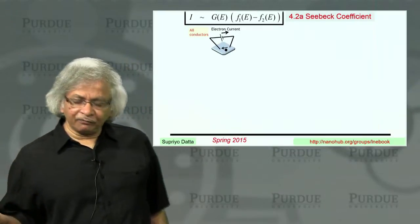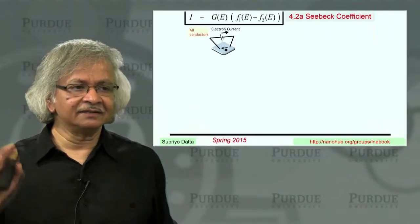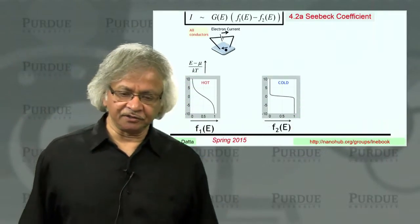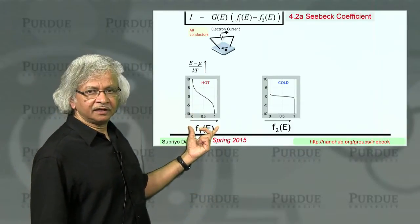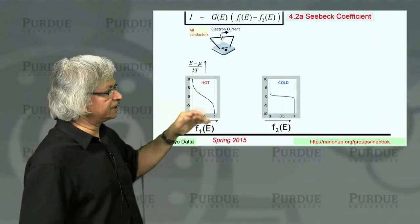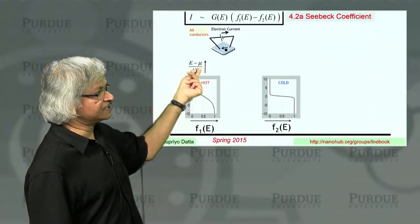Now there's another way of making the Fermi functions different in the two contacts. Let's say that they are the same potential, but supposing there's a temperature difference. As you know, the Fermi function depends on this E minus mu over kT. Usually the difference comes from a difference in mu, but it could come from a difference in T.